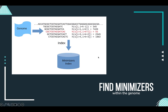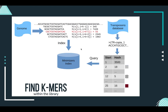With that, we build the index of the minimizers, where we store the hashing value of each minimizer and its position within the genome. This allows us to easily identify where each minimizer is located in the genome.